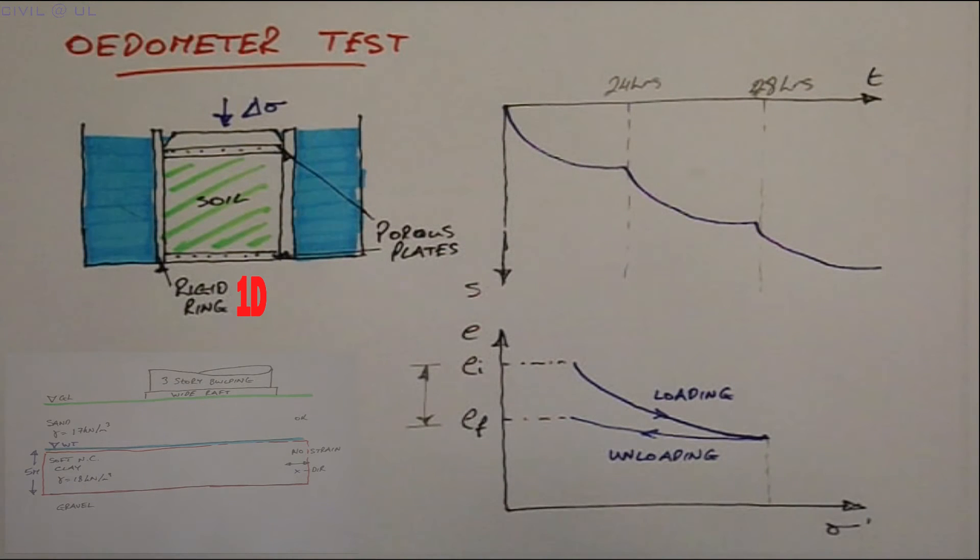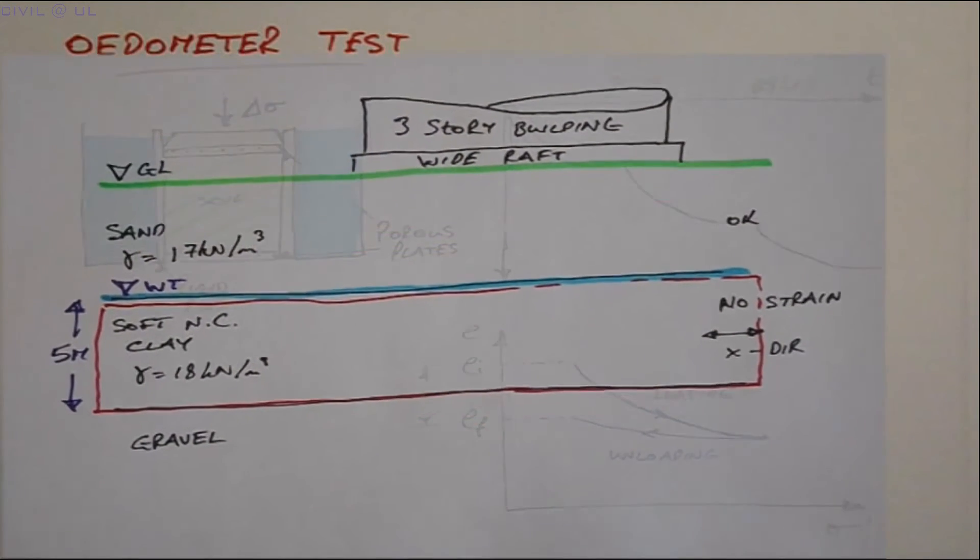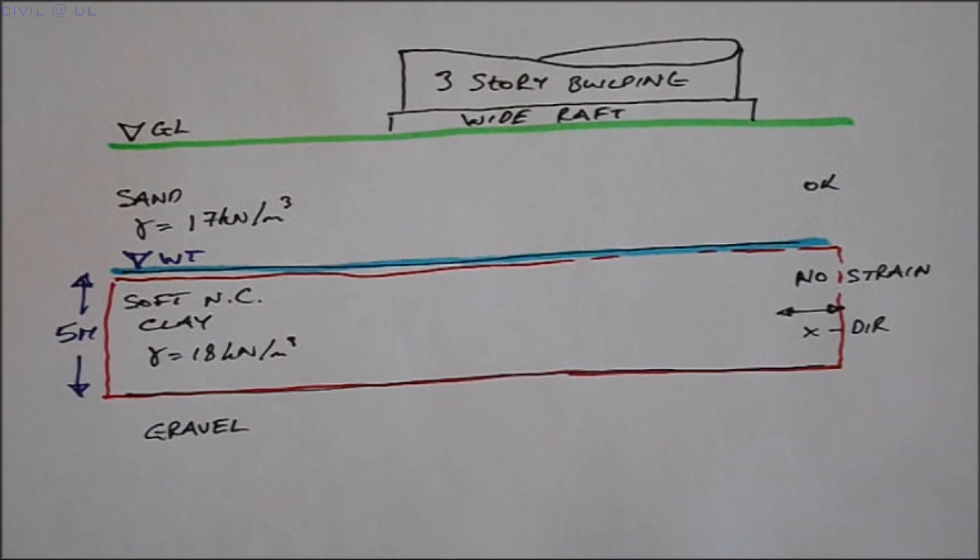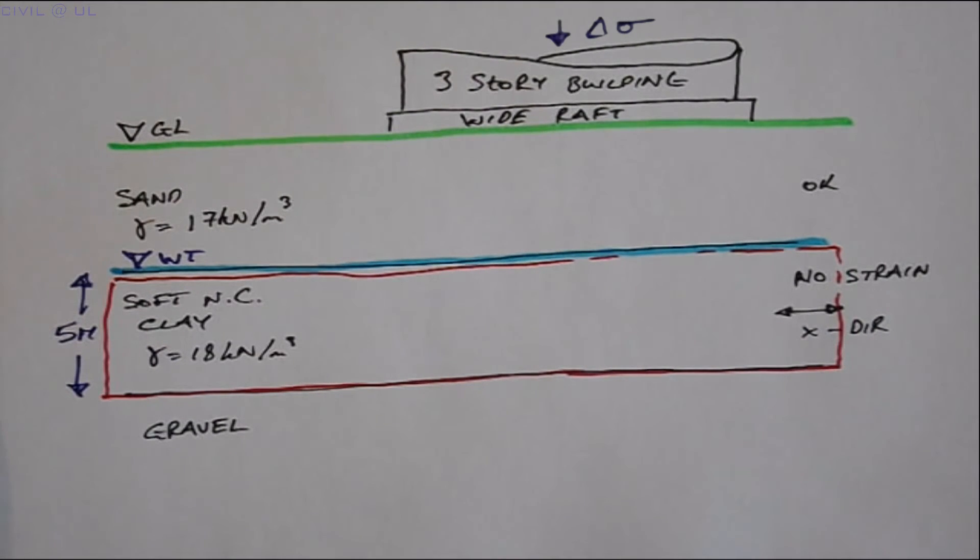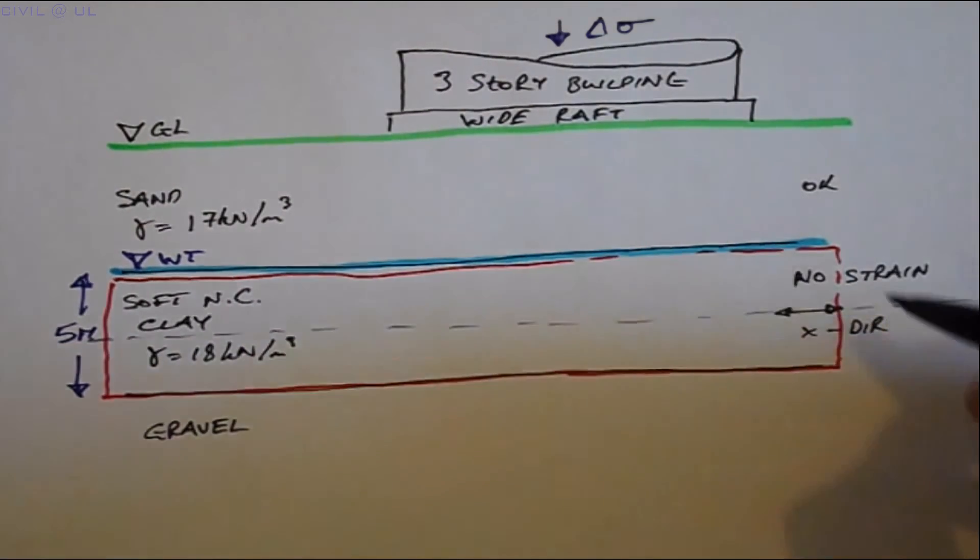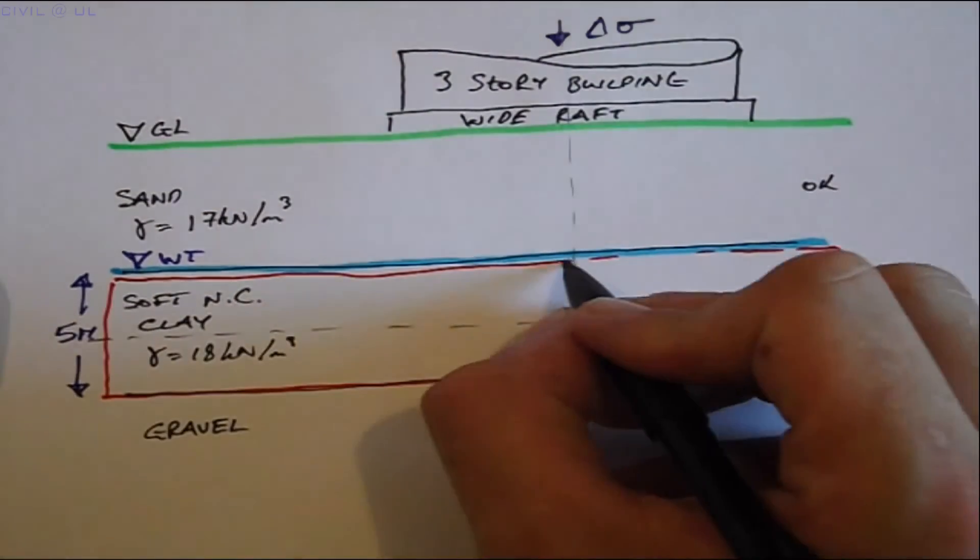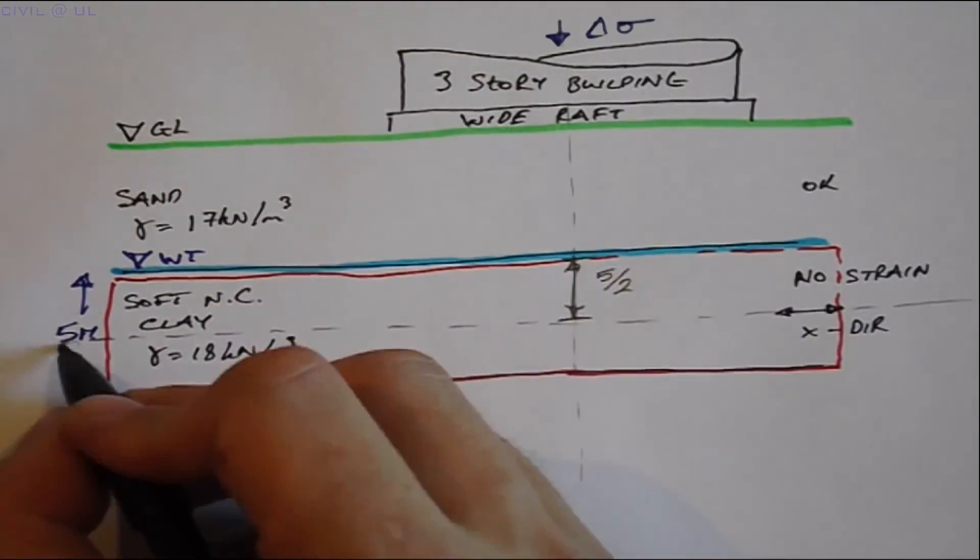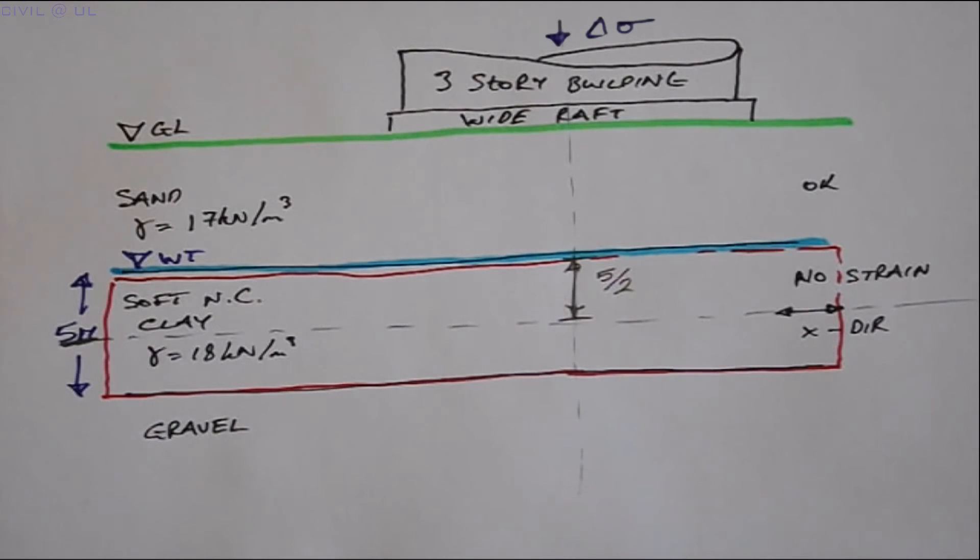Next, for the clay layer, we need to calculate the in situ vertical effective stress due to the overburden and the change in stress from the new construction. It's normal practice to divide the consolidating stratum into a number of layers, particularly if it exceeds three meters in thickness. However, in this case, we will take the layer as a whole and use stresses at the center as being representative of the overall stratum.